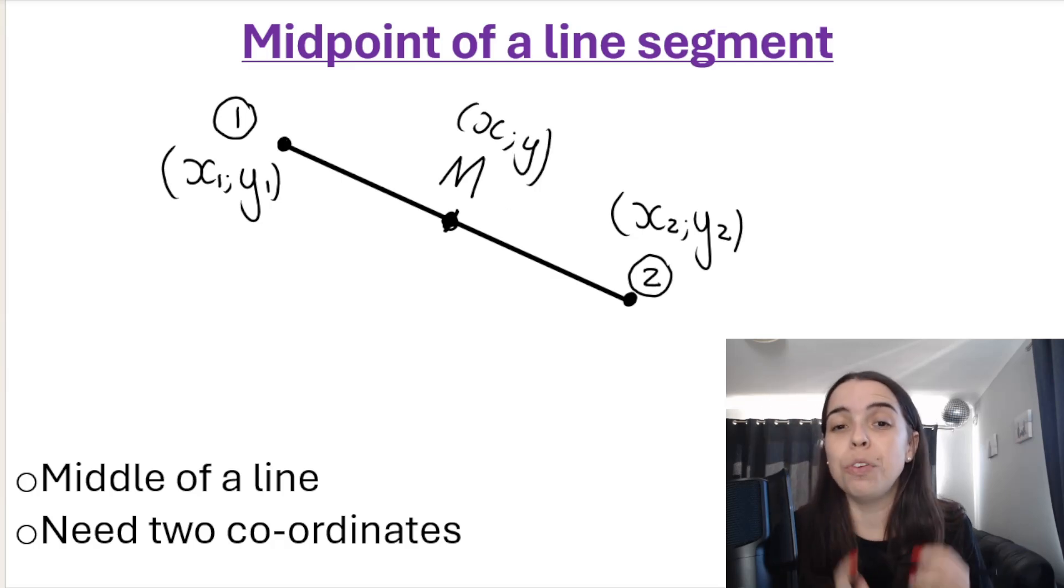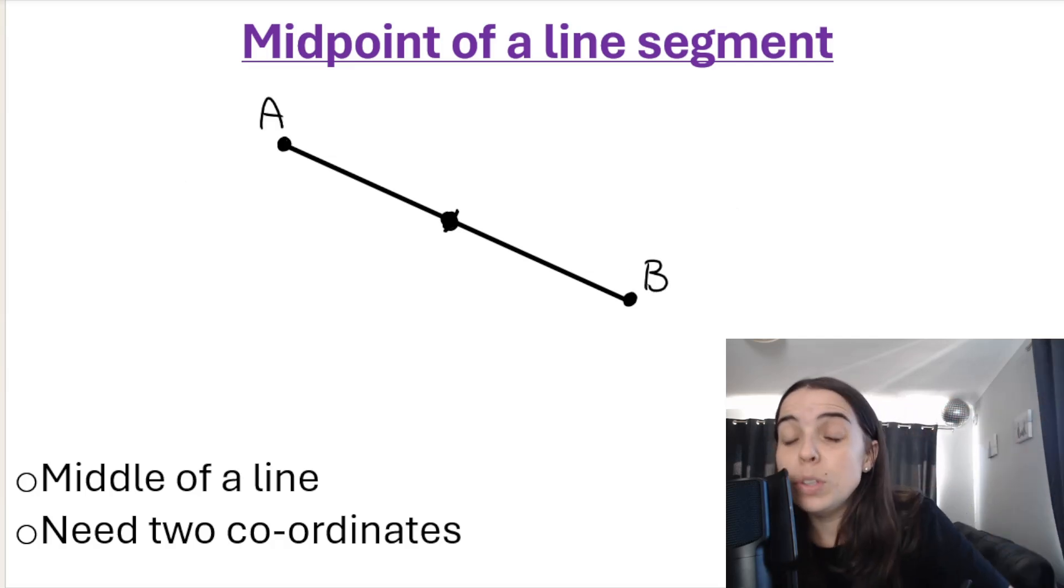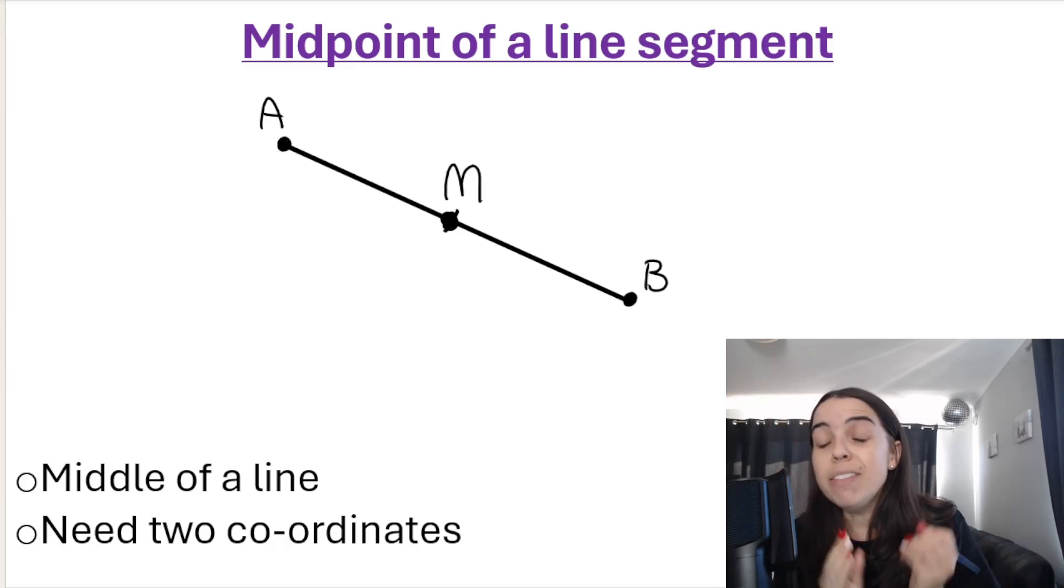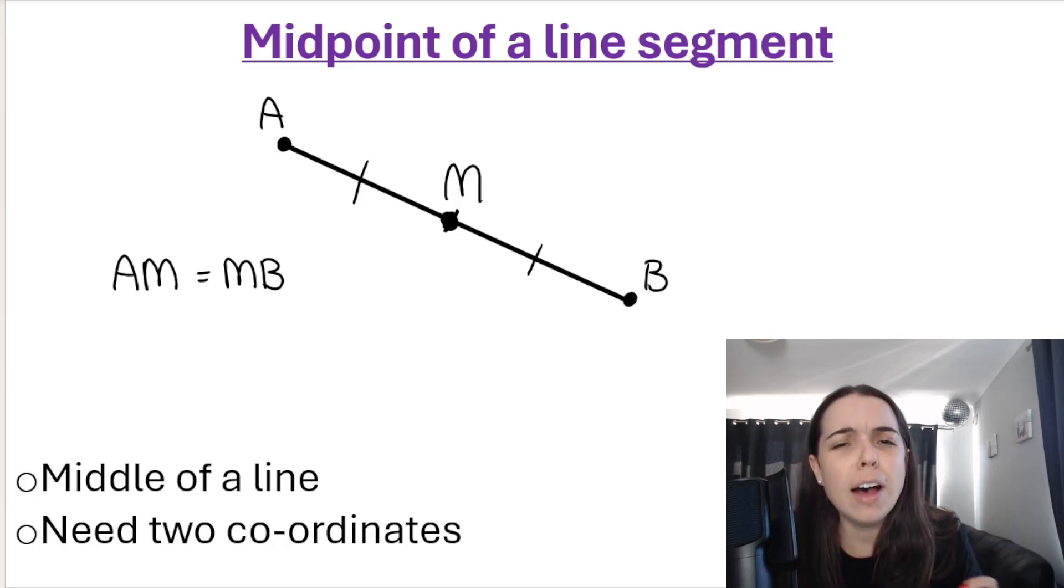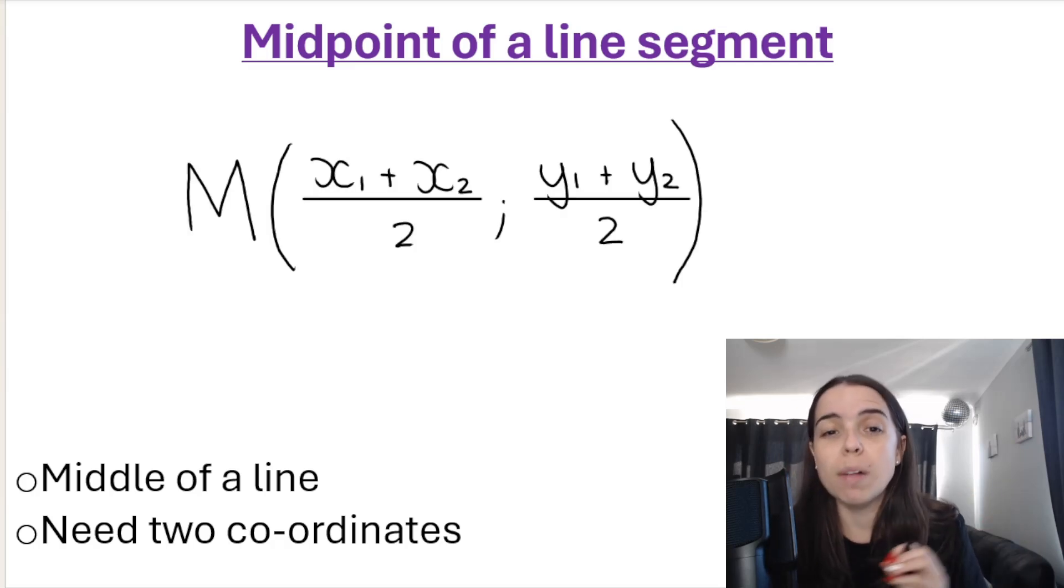Now I'm going to teach you how to find out what that coordinate actually is of that line. What's also important to note, let's say I've got the line segment AB and the midpoint is M. If M is the midpoint in the middle of the line, then AM is going to be equal to MB. So those distances will be equal. But how do we find the midpoint of a line segment?